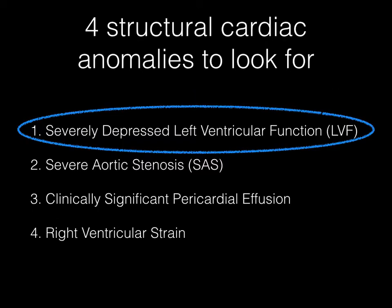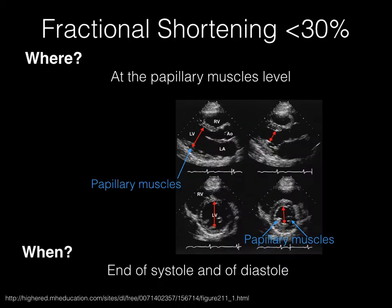Let's start with what we want to identify for our syncope patients. We want to know if our patient has severely depressed left ventricular function that could be causing the syncope presentation. To define severely depressed left ventricular function, we use two criteria. The fractional shortening should be measured at the level of the papillary muscles at end systole and diastole to see if there is a change of less than 30%, using an eyeballing method.